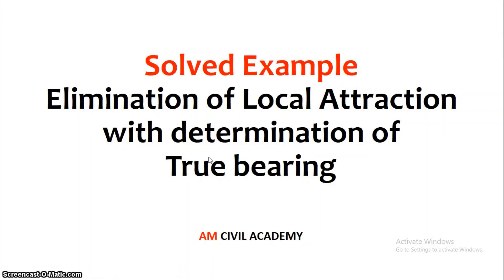In this video, we will be discussing a worked out problem from combo surveying. Combo surveying — covering bearings, forebearing, backbearing, their relations, local attraction and elimination of local attraction — is already discussed in a previous video. In this video, we will be discussing magnetic declination, which was not included in that previous video.